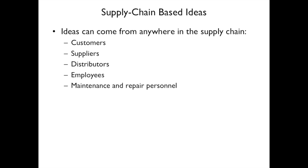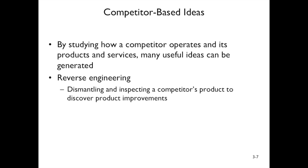Where do you get ideas for new products? Ideas can come from anywhere in the supply chain: customers, suppliers, distributors, employees, and maintenance and repair people. Maintenance and repair people are especially valuable because they see what's coming back and what's breaking — one idea might be to reduce maintenance by upgrading a part that needs repair all the time. There are also competitor-based ideas — when a competitor comes up with new products or services.